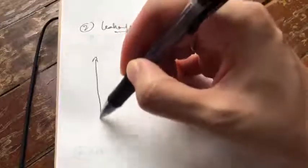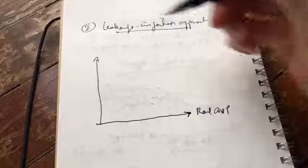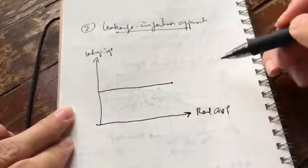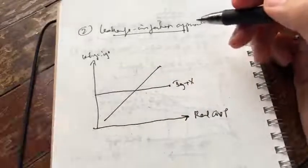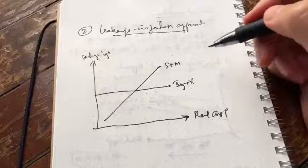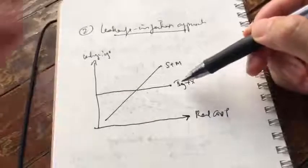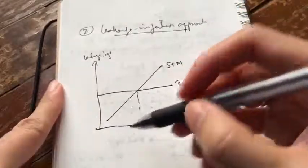Now let's look at the same example using the leakage-injection approach. For this approach, we use the leakage-injection model instead of the Keynesian cross. Here we have real GDP on one axis and leakage-injection on the other. Initially, the injection line is IG plus X — no G yet — and the leakage line is S plus M. The initial equilibrium GDP is 470 billion, just like before.